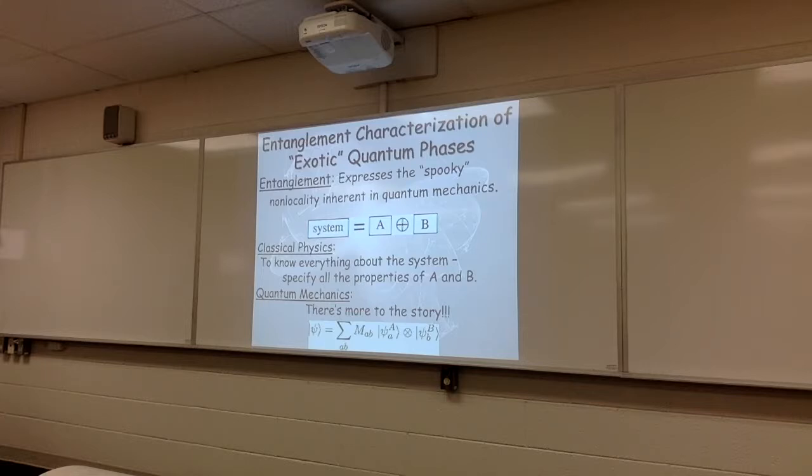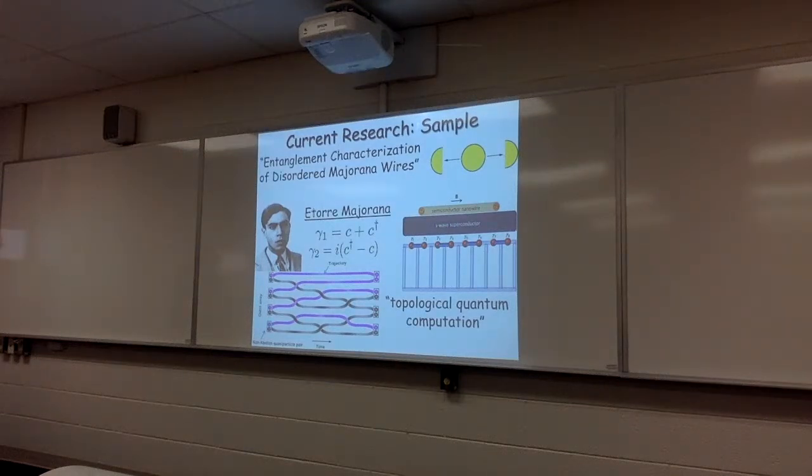So entanglement, essentially, paraphrasing Einstein, expresses the spooky non-locality inherent in quantum mechanics. So in classical physics, if you have a system that is composed of two subsystems, A and B, how do you know everything about the composite system? Well, if you know everything about what's in each individual box. But in quantum mechanics, there's more to the story. Very simply because of superposition in quantum mechanics, there's a lot more that can happen than just having things specifying what's in box A and what's in box B.